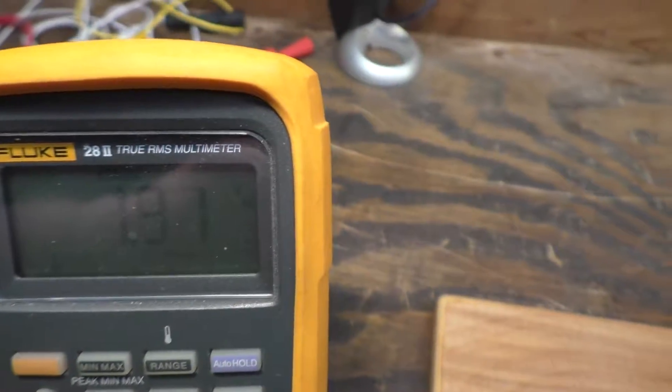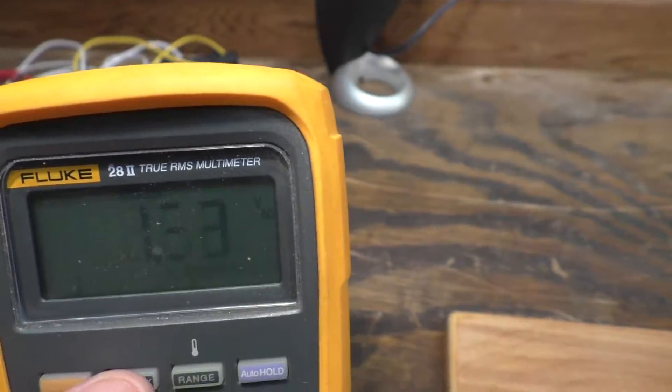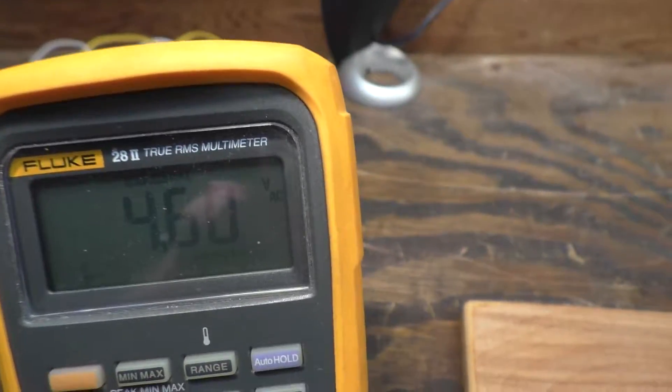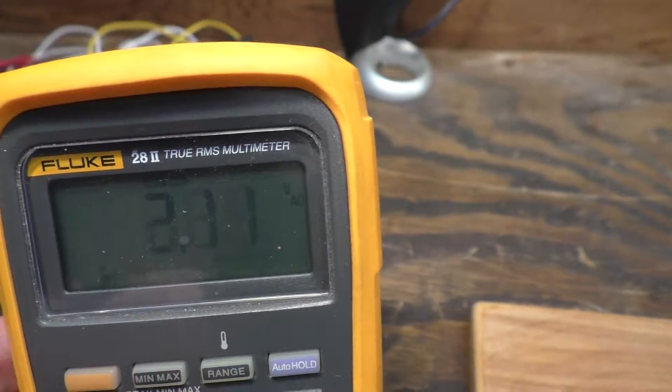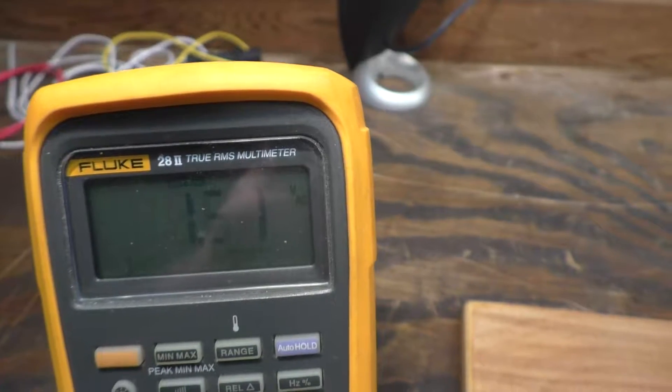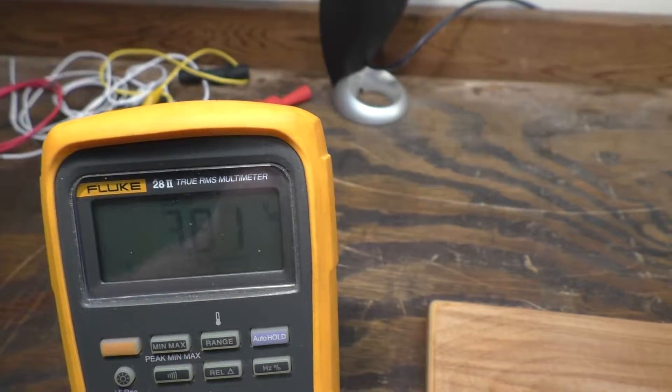And right now I've got it on min-max. Let's see, 4.6. It's getting faster. So I'm getting about 4.6 volts alternating current out of this thing right now.